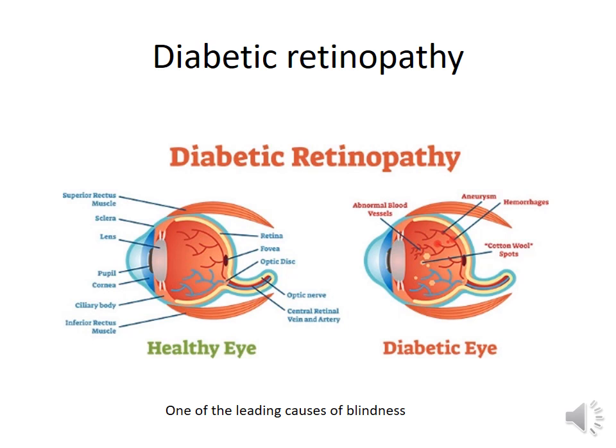Diabetic retinopathy is one of the leading causes of blindness. Blood vessels supplying the retina are affected, showing increased tortuosity, aneurysms, hemorrhages, and cotton wool spots. Neovascularization — formation of new, fragile blood vessels — can lead to hemorrhages, macular edema, and vision disturbances. For diabetic retinopathy, a fundoscopic examination is performed using mydriatics to assess the status of retinal blood vessels in patients with hypertension and diabetes.